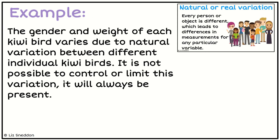If I think about the gender and the weight, for every kiwi bird that's naturally going to vary — their gender and weight is going to differ between every single bird. In this case it's actually not possible to control or limit the natural variation between each bird, which is why a trivial natural-variation example won't meet the criteria for the standard, because this natural variation is always going to be present.